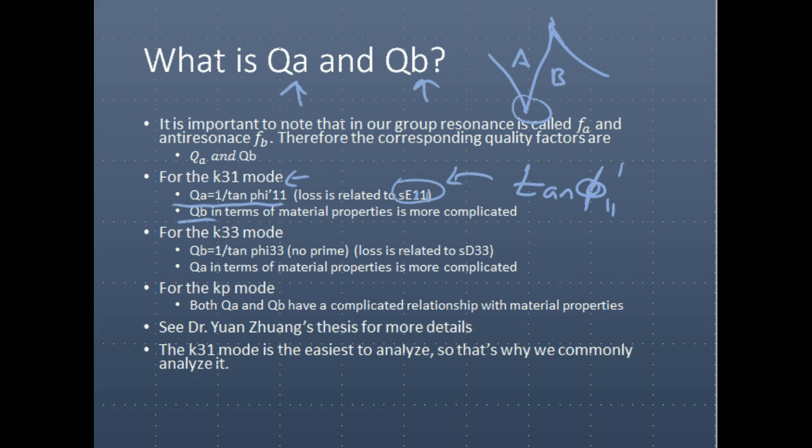So typically you measure QA for the quality factor. However, for the K33 mode, QB refers to the resonance frequency — specifically to the mechanical resonance frequency. Not the frequency which gives the largest vibration for a certain voltage — that is still the resonance frequency of lowest impedance. However, the frequency corresponding to a half-wavelength displacement is the anti-resonance frequency for the K33 mode.